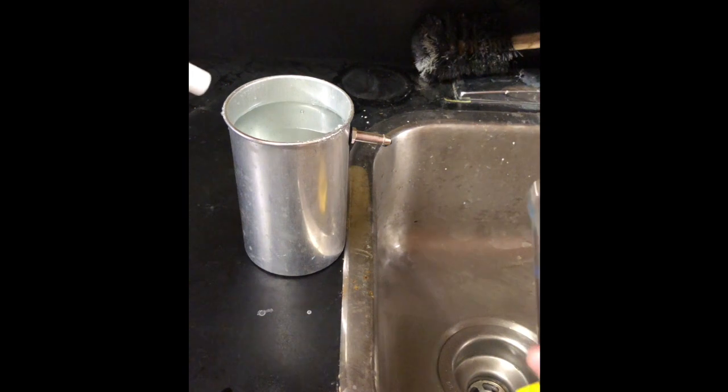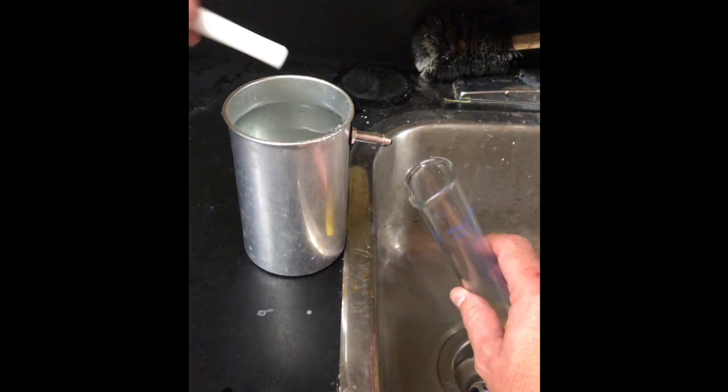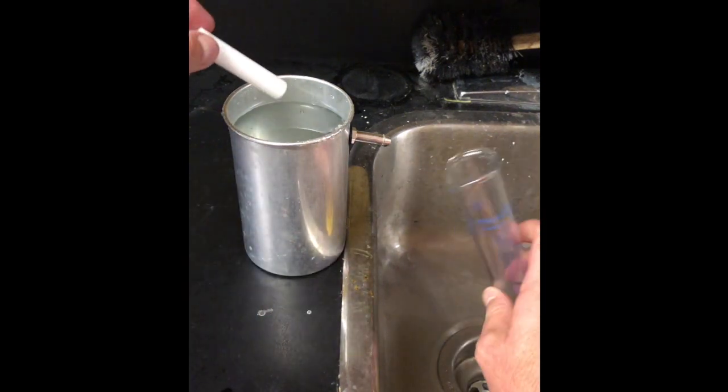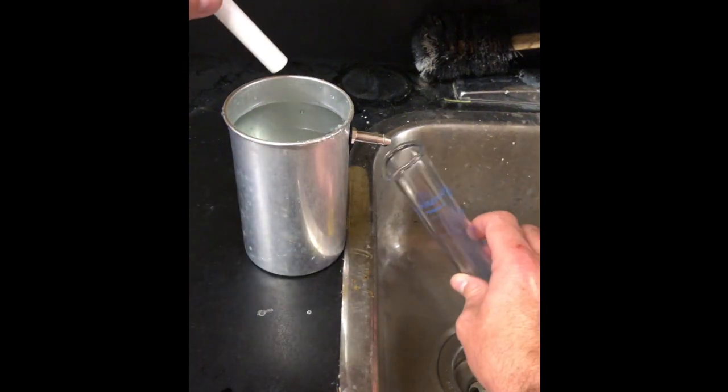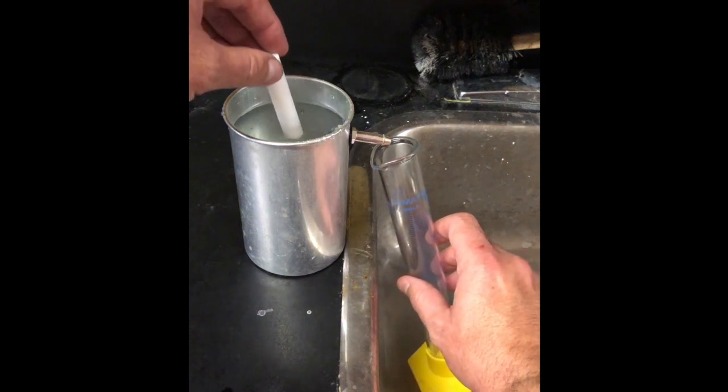But I'm going to show you how to use this displacement can. So we know that this object is going to take up space inside the can and you can see there's a spout here. It's quite full, and so when I take this and put it into the displacement can, there's going to be water that comes out into my graduated cylinder.